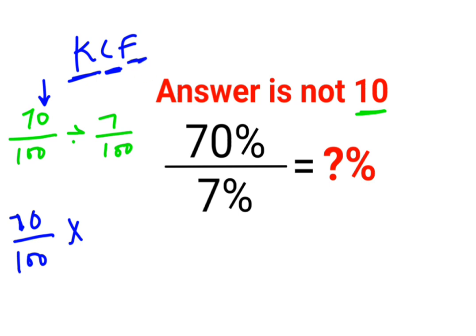F stands for flipping or taking reciprocal of 7 upon 100, that is 100 upon 7. So now this gets cancelled and this is 1 and 10.